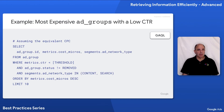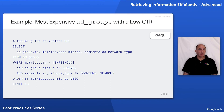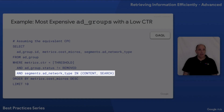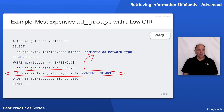This example illustrates a couple of the principles we have been talking about. First, we are only selecting ad groups that have not been removed — in the previous example it was possible that top impression dates could have been biased by an already-removed ad group. Second, we are subsetting by network type, selecting only content and search network types. Note that if you put a particular segment in the WHERE clause, such as an AD_NETWORK_TYPE, you have to have the same segment in the SELECT clause, otherwise you will get an error.